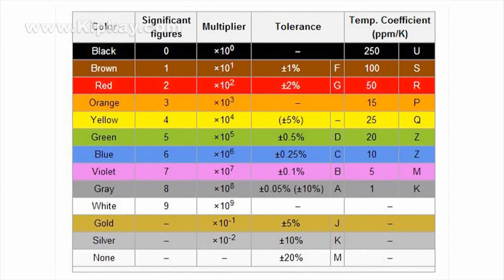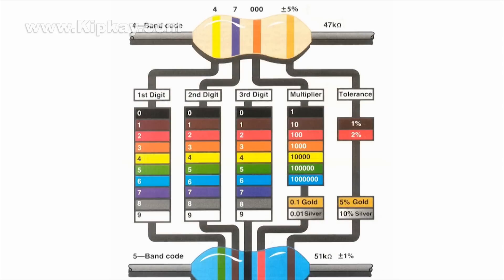And that brings us to the color bands and explaining what they are. The color bands are the way to determine what ohm rating and tolerance a resistor has. For example, in this top resistor with four bands, the first band is yellow, which is four. The second band is purple, which is seven. The third digit is the multiplier — in this case it's orange, so that's a thousand, which makes this a 47,000 or 47K ohm resistor.